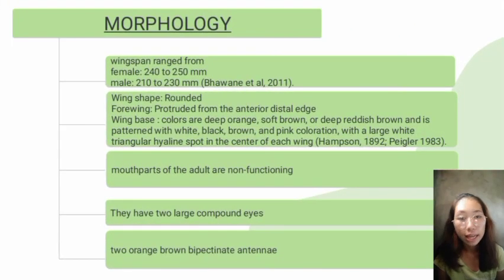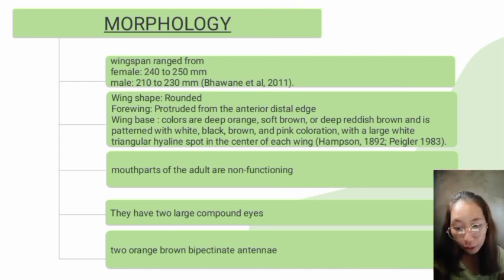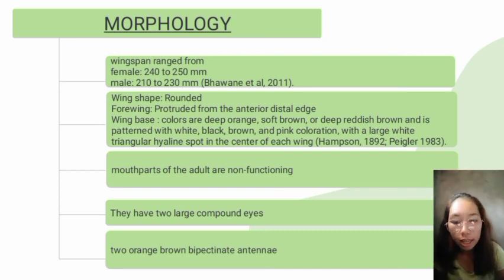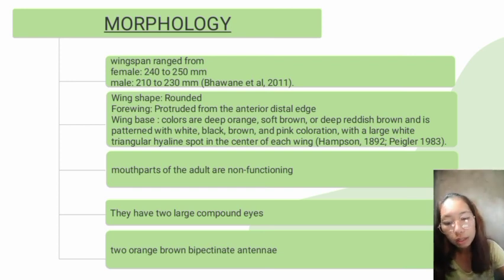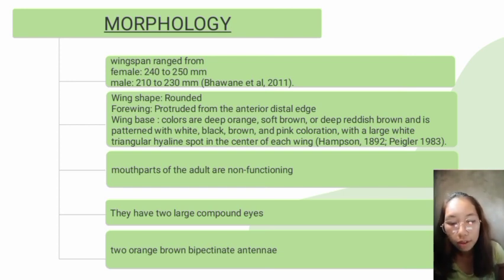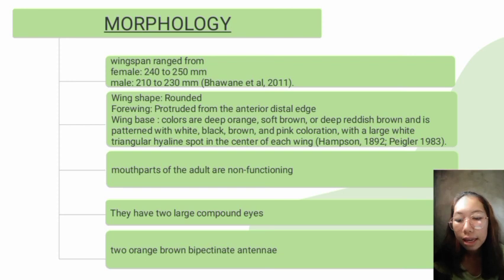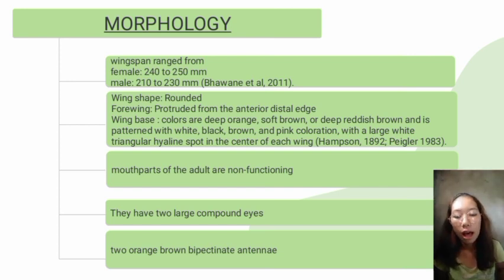Its morphological identifying features: its wingspan in females ranges from 240 to 250 mm, and in males from 210 to 230 mm. Its wing shape is rounded. The forewing is protruded from the anterior distal edge. The wing base colors are deep orange, soft brown, or deep reddish brown, and is patterned with white, black, brown, and pink coloration, with a large white triangular hyaline spot in the center of each wing.